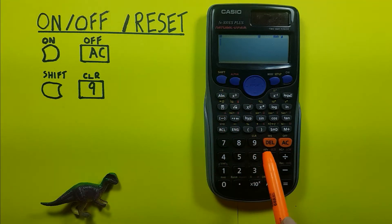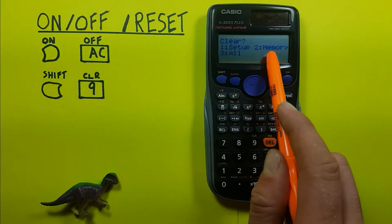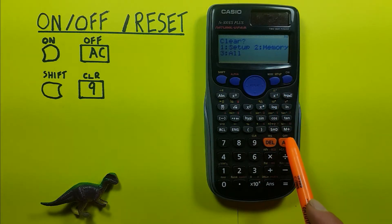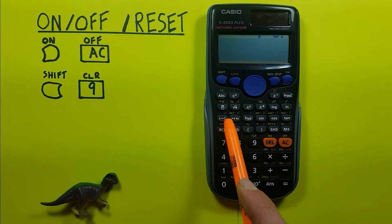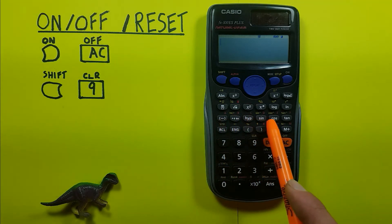The next option in our reset menu is number two, memory, which affects these keys here, our memory slots: A, B, C, D, E, F, and M, as well as X and Y.